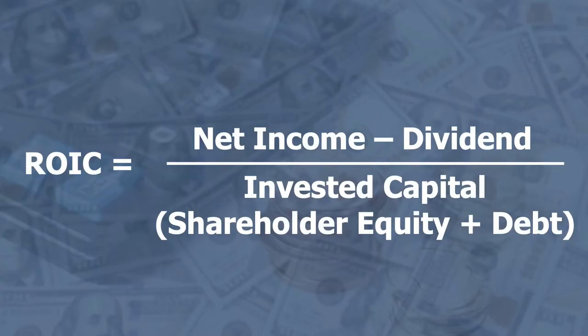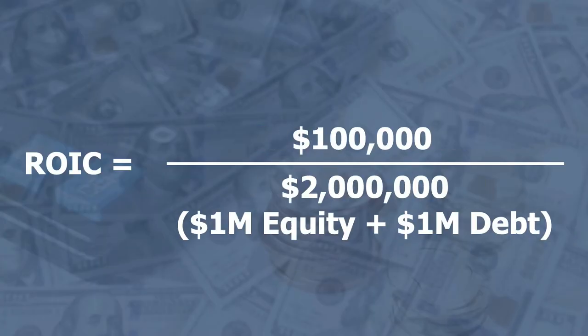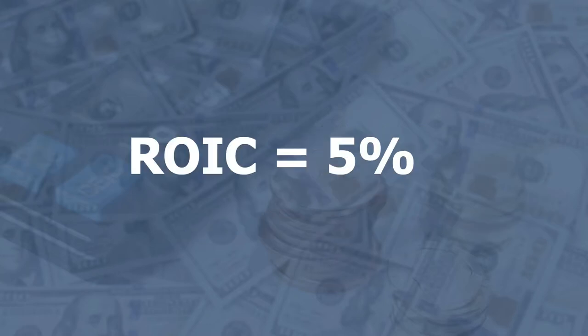This gives us the total capital the company has available to put into the business. Using the same example as before: if we're making a profit of $100,000, but now we have $1 million of equity and $1 million of debt, we take $100,000 divided by $2 million, giving us a return on invested capital of 5%. We want to compare this year on year and see it staying the same or increasing.